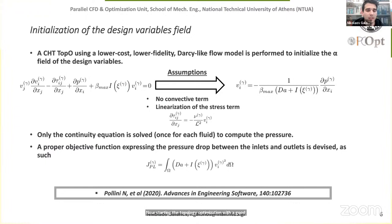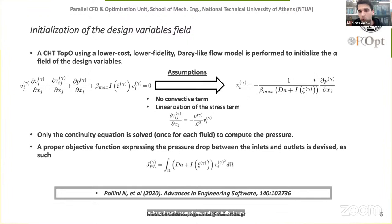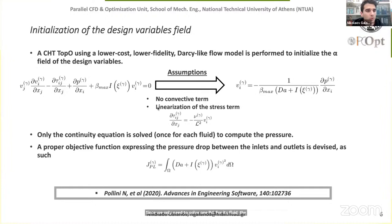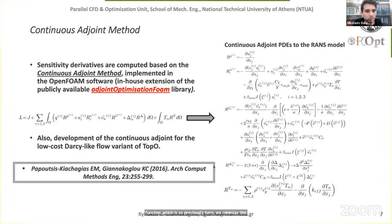Starting topology optimization with a good initialization can significantly reduce cost. We use a low-cost, low-fidelity Darcy-like flow model derived from Navier-Stokes by eliminating inertial forces, where velocity is proportional to the local pressure gradient. This requires solving only one PDE per fluid — the continuity equation — to compute pressure, making it significantly faster than the RANS model. We minimize a volume-based objective function expressing total pressure drop between inlets and outlets.